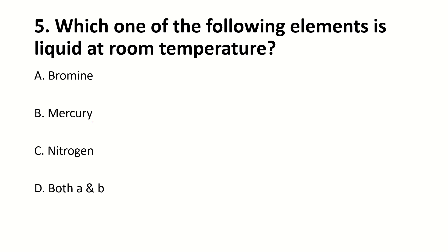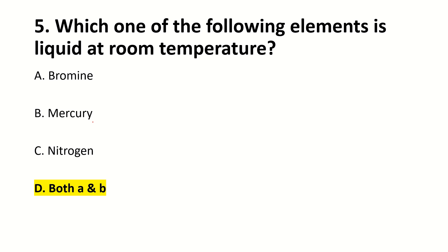Which one of the following elements is liquid at room temperature? The right answer is D: both A and B. The unique property of an element is called dash. The right answer is B: Valence.